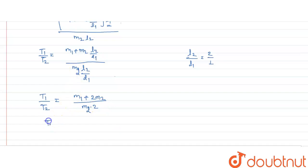Our T1 by T2 will be M1 plus 2M2 upon 2M2. This is our answer. Thank you.